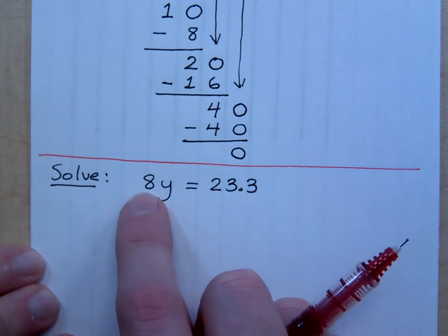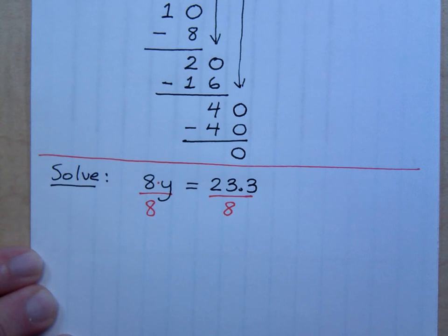If I gave you this problem 8y equals 23.3 how would you solve it? Remember when you're solving you're getting the variable completely by itself. So I want y by itself. How do I undo what the 8 is doing? This is multiplication. The opposite of multiplying is division. So if I divide both sides by 8, well that gives me just plain y equals, and so you see 23.3 divided by 8 you've already done. What is it? 2.9125.